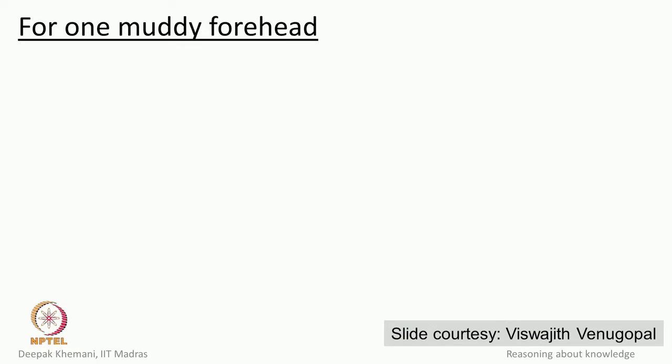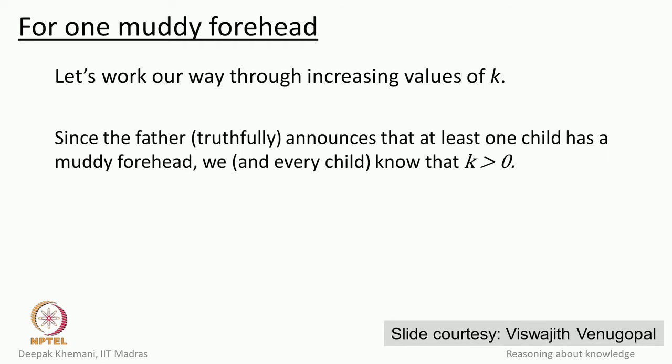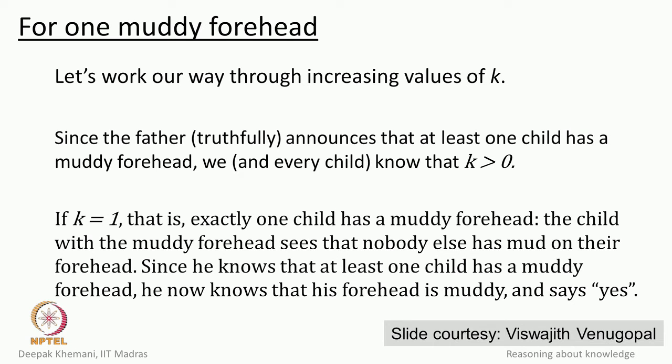Let us analyze: what if k equals 1? Since the father truthfully announced at least one child has a muddy forehead, we know k is greater than 0. If k is 1, only that one child would not have known their head was muddy, because all other children have clean foreheads. So that child knows it must be their own forehead that is muddy, and at the very first instance will answer 'yes, I know my forehead is muddy.' If k equals 1, the case is simple.